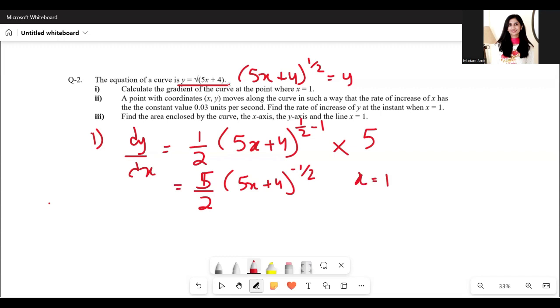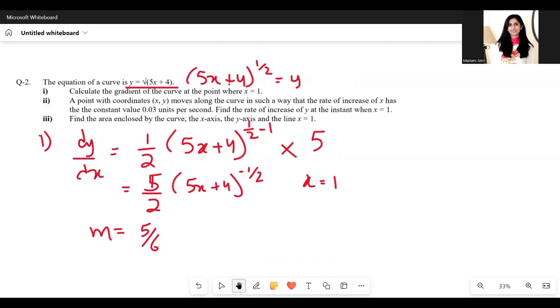Enter that in your calculator and that gives you the value of the gradient or m, which comes out to be 5/6. So dy/dx came out to be 5/6 at x equals 1.